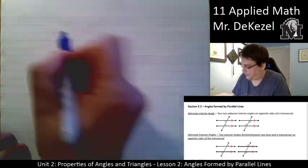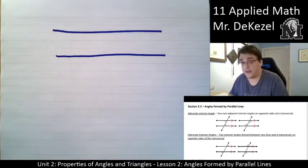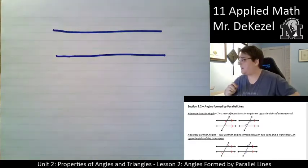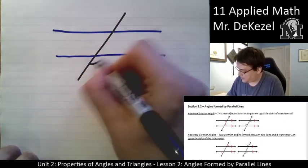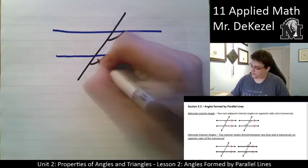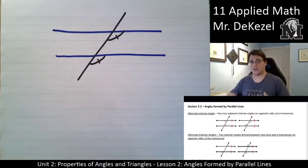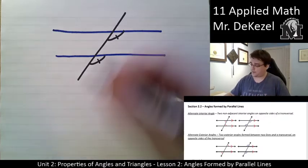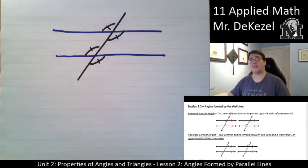We had talked about before, when we had two parallel lines and a transversal crossing those parallel lines, we had talked about corresponding angles and how those are the same. We had also mentioned a rule that if we had exterior and interior angles that were opposite of one another, they were the same. So that is all going to hold true.